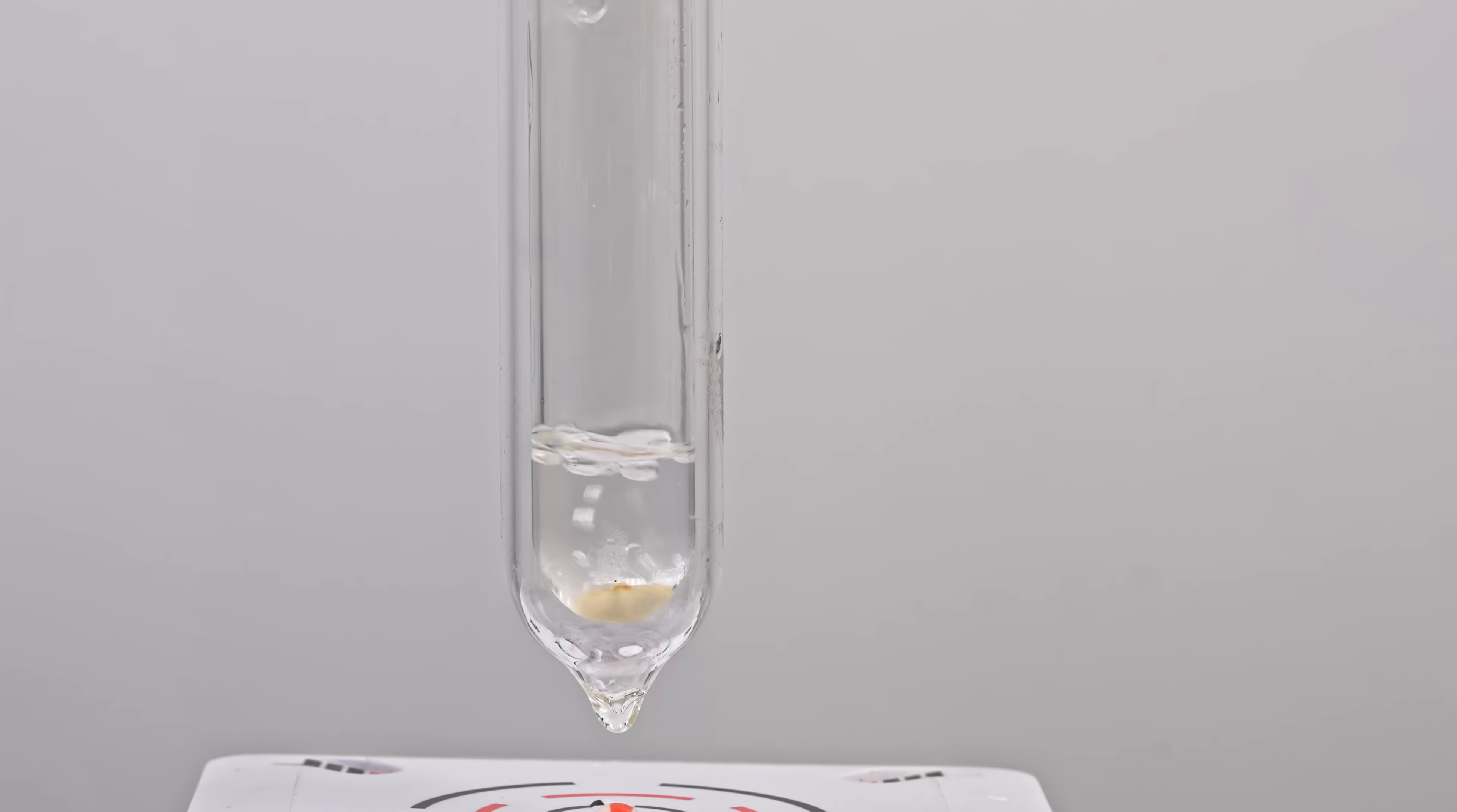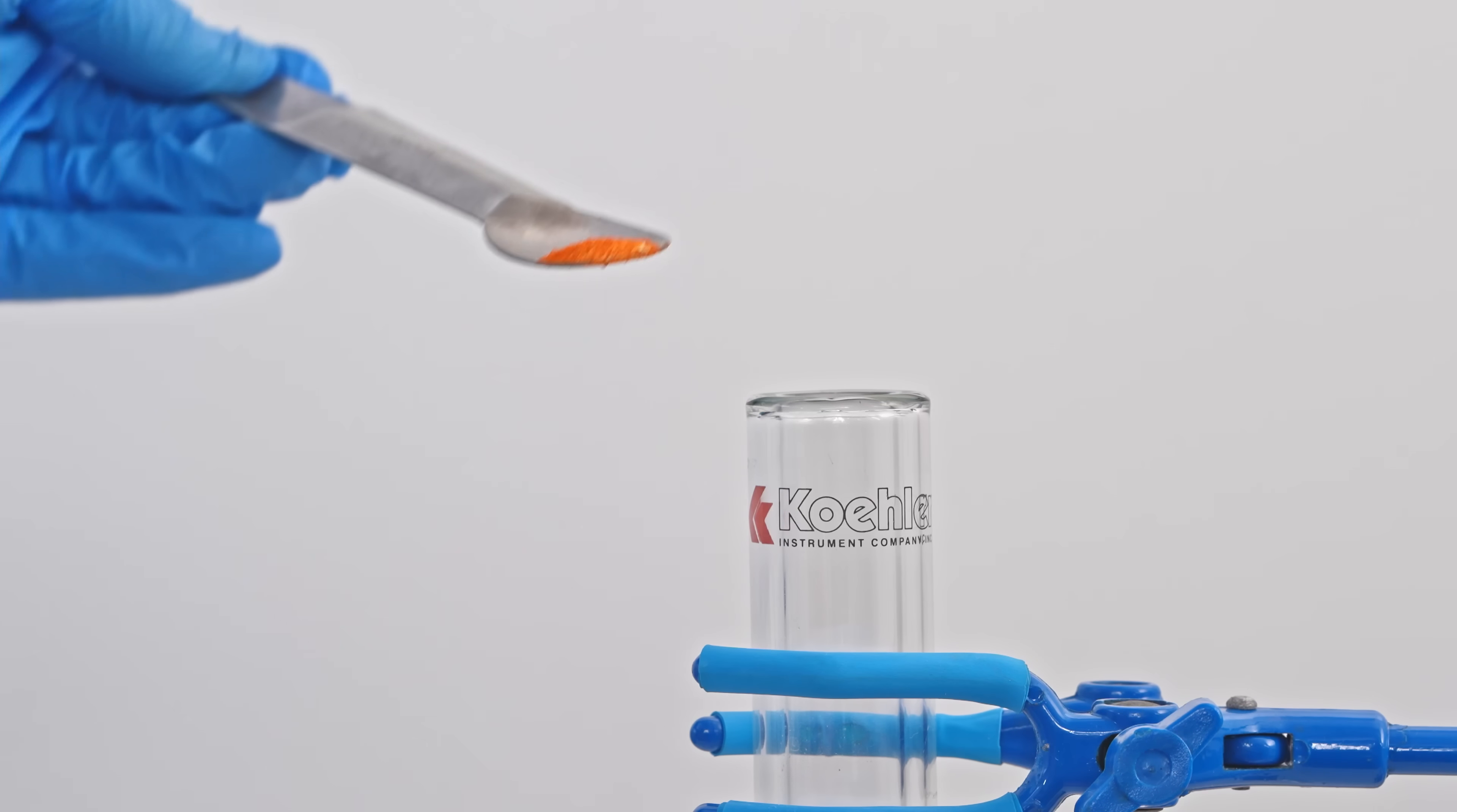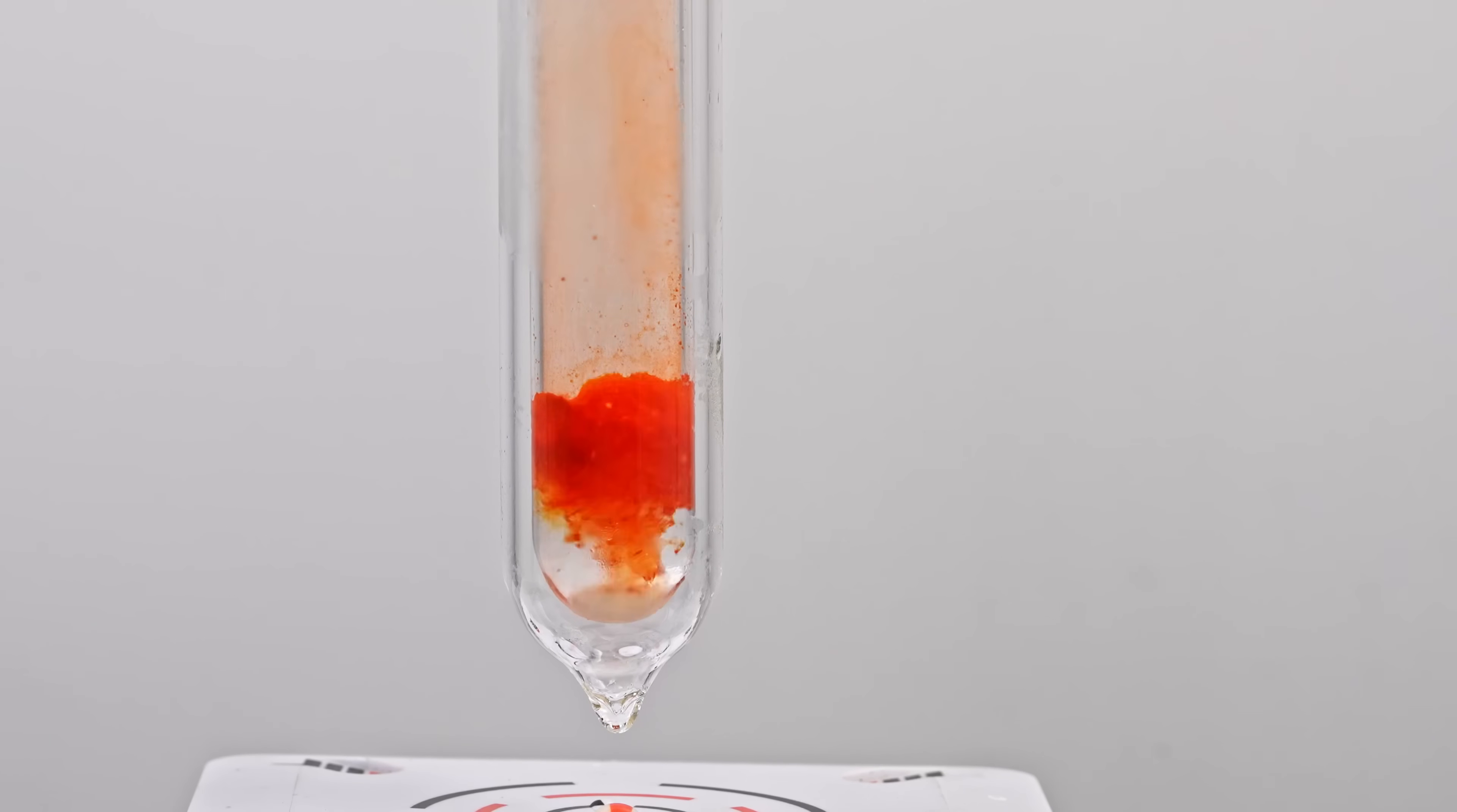If I pour liquid ammonia into a test tube and add a bit of potassium ozonide, the solution immediately turns a deep red, while the unreacted potassium superoxide settles out as a solid.